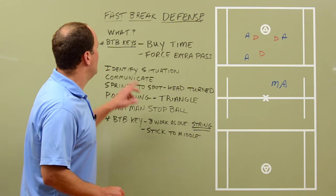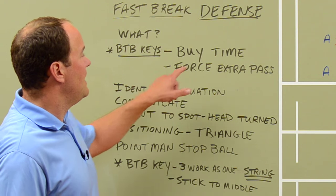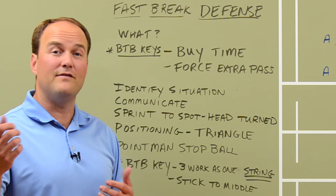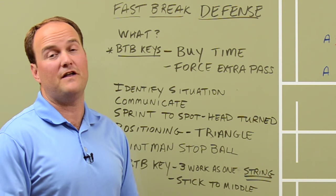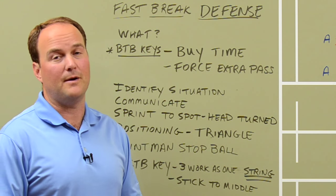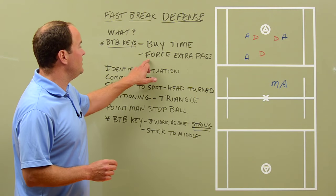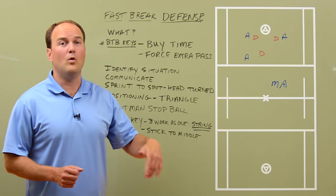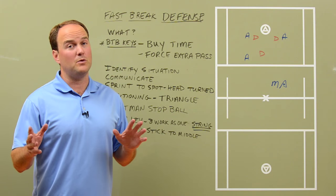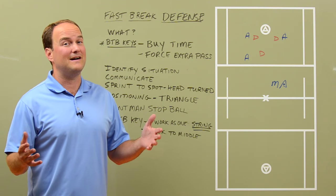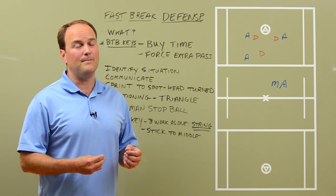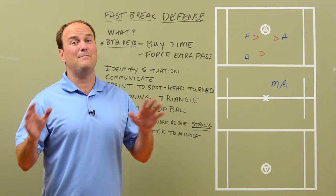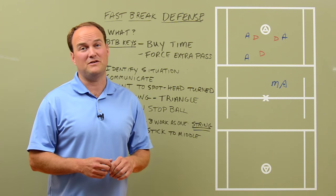So how we defend a fast break — a couple BTB keys to keep in mind. As defenders, we're trying to buy time. All we need is like 2 or 3 seconds and that'll give us enough time for that 4th, 5th, or 6th defender to get in there, and then we'll be all marked up and numbered up and able to play 6-on-6 defense. We stay nice and tight but force extra passes — force them to make another 1, 2, 3 more passes. We'll buy that time to get the extra defender in, and they could throw the ball out of bounds or drop the pass where we can scoop up the ground ball. A lot of bad can happen for the offense when they're forced to make 2 or 3 extra passes.